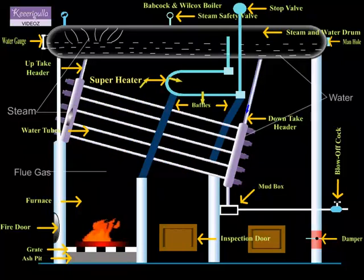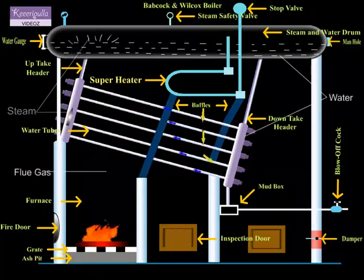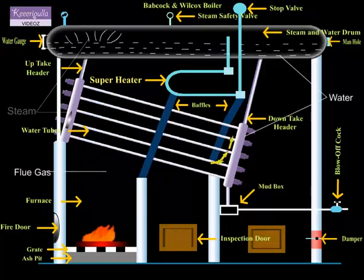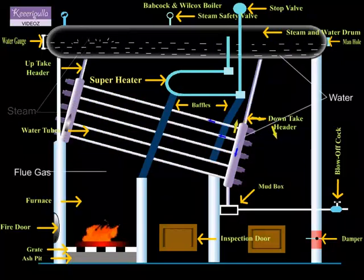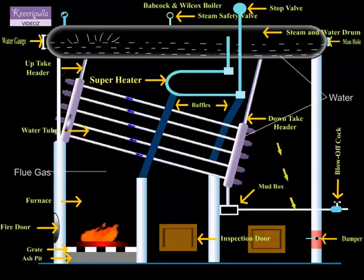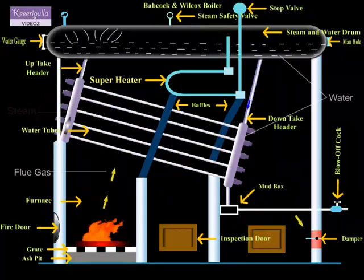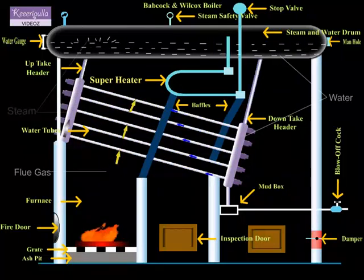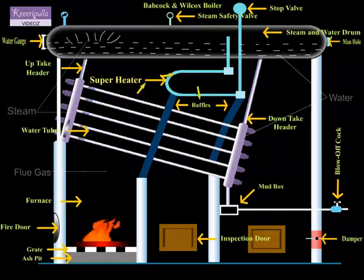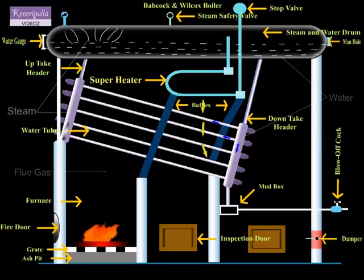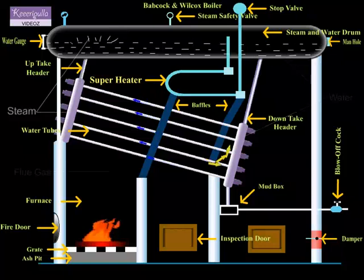Now we shall see the superheating of steam. The steam that is collected in the steam space gets superheated as it passes through the superheater and flows out of the boiler through the steam stop valve.